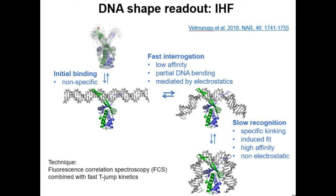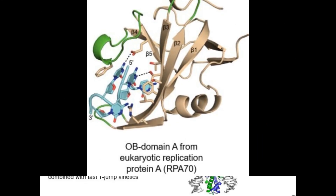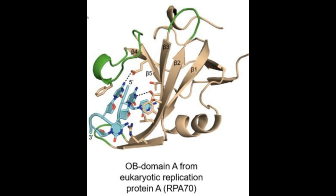Some proteins even interact with single-stranded DNA. For example, the single-stranded binding protein (SSB) acts during the lagging strand replication process. It binds to the oligosaccharide-binding (OB) fold, which is a common binding site not specific to DNA — it also occurs in RNA.